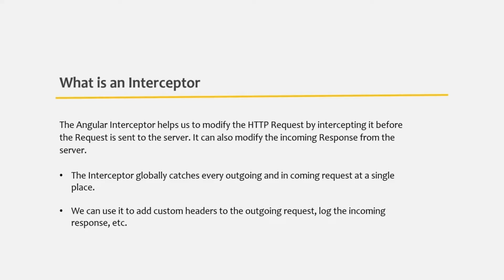Basically, we use interceptors to modify a request before it is sent to the server, and once we receive the response, before using it in our application, we can also modify the response with the help of interceptors. One of the main use cases of HTTP interceptors is to add the authorization header to every request. We could do this manually for each request one by one, but if we use interceptors to add the authorization header, that header will be set for all requests sent from our application — so we don't have to do it manually for each request.